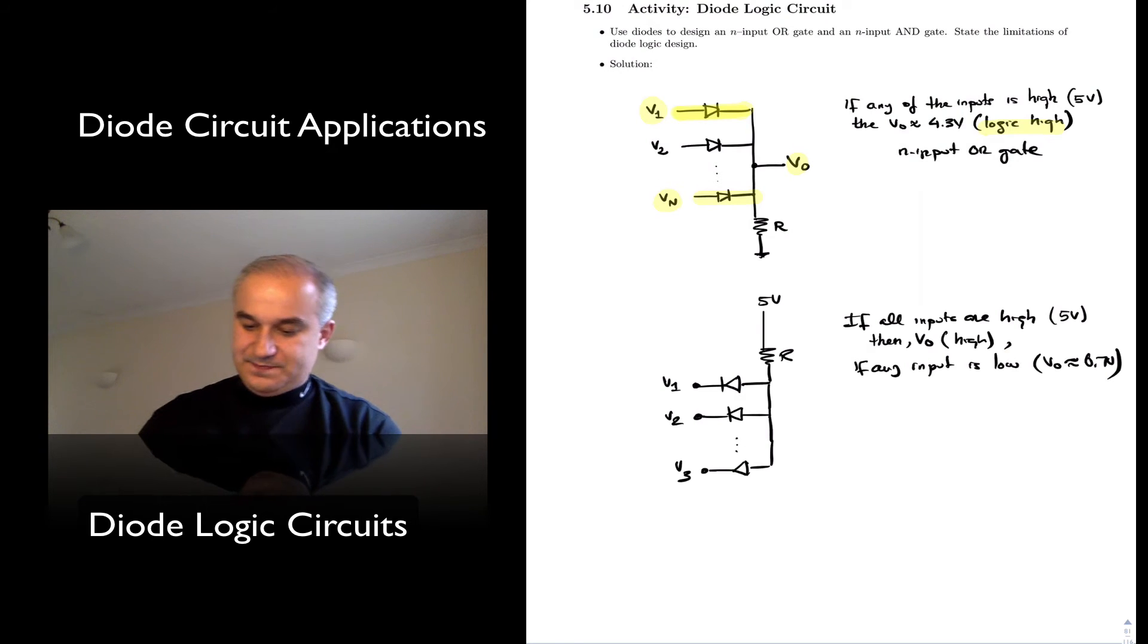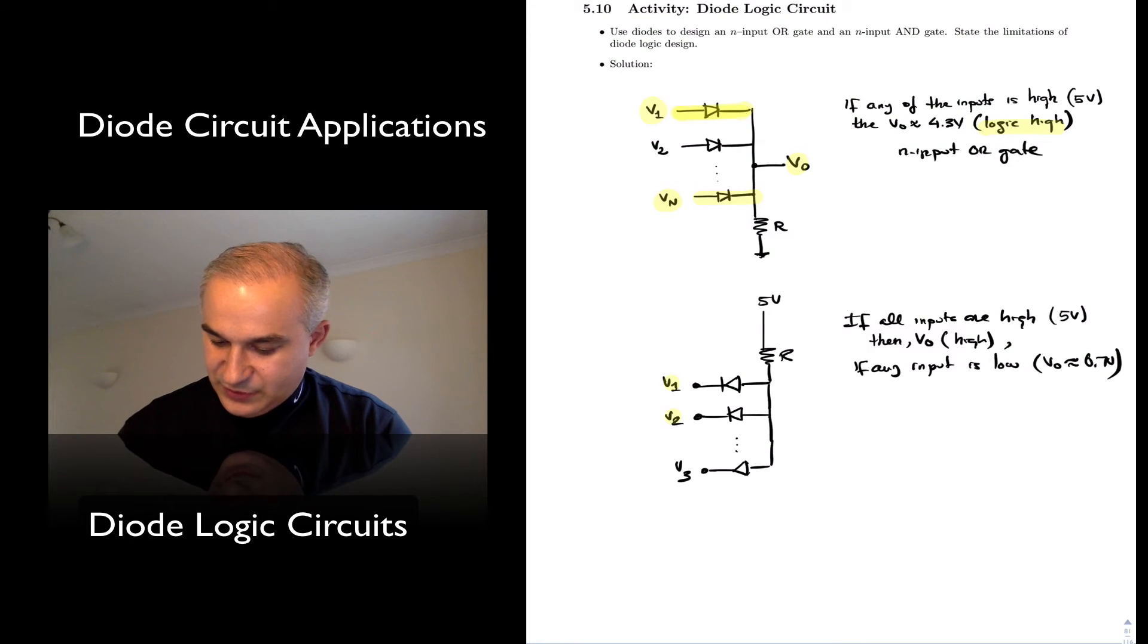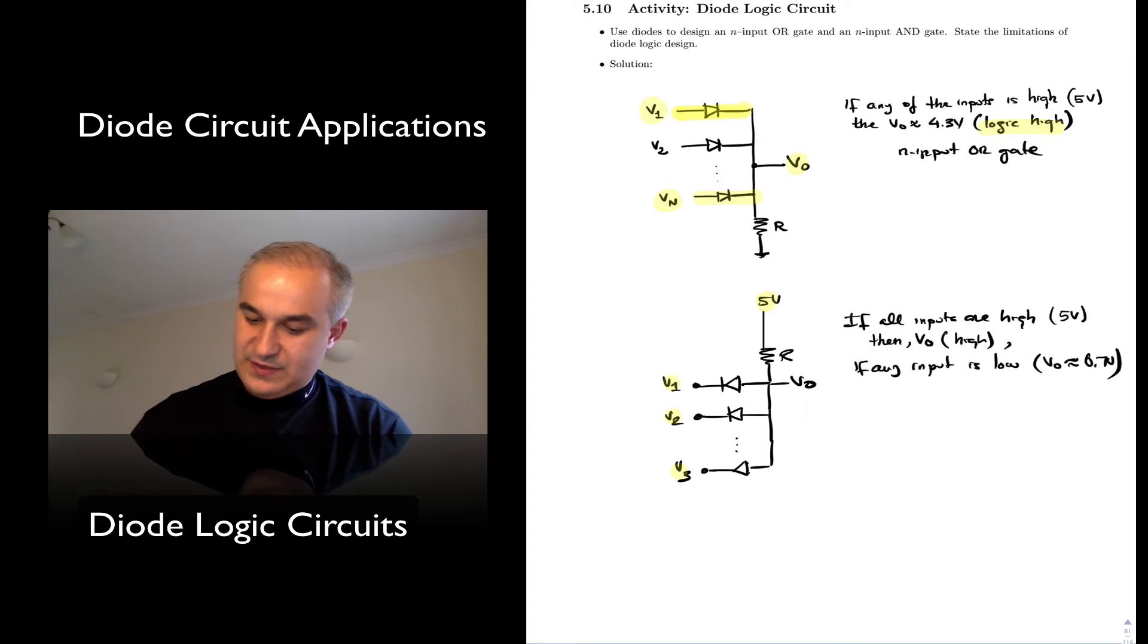Check this out. So if all the inputs are high, this is Voutput, the output is going to be high. They can even be not conducted. So this is no voltage drop, no current, they're all open, high output.